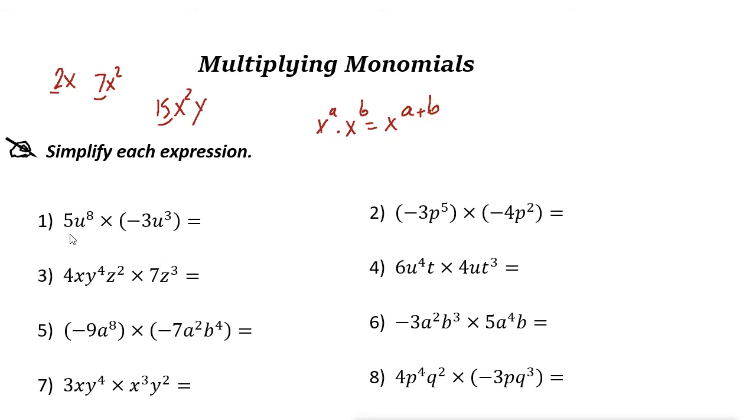Here we have 5u to the power of 8 times negative 3u to the power of 3. So first, multiply the coefficients. 5 times negative 3 is negative 15. And u is the same variable, so we have the same variable both. Just write that. And the power is 11.